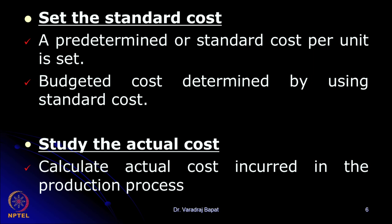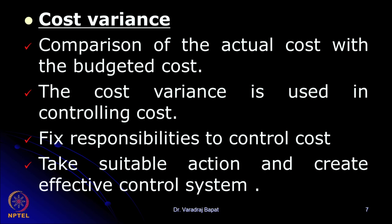The next step is the study of actuals. We calculate the actual costs so that they can be compared with the standards. The third step is cost variance — the actual is compared with the budget or the standard cost and the cost variance is calculated. Then we break down the variances and fix the responsibility for controlling the cost. If the variance is more than desired, suitable action is taken so that such instances of deviation are not repeated. And if required, one may reset the standard based on feedback from actual cost.